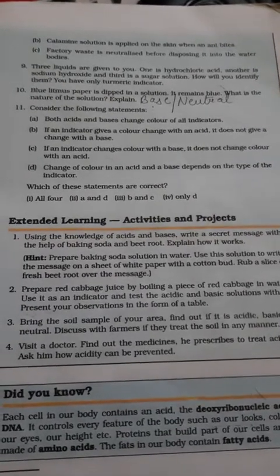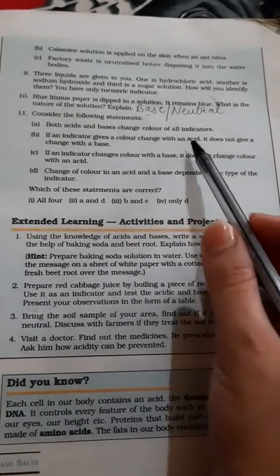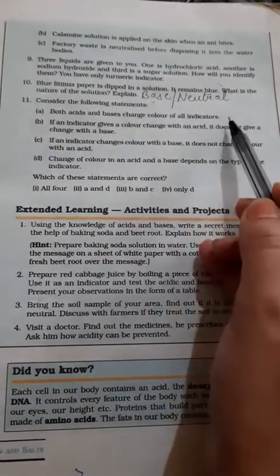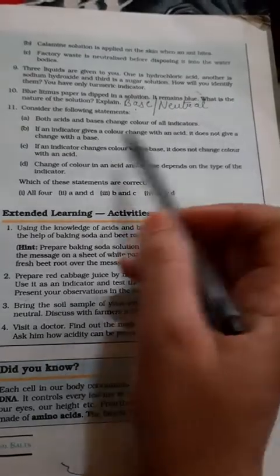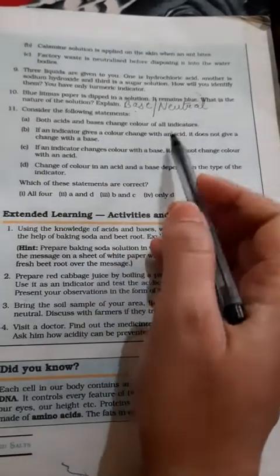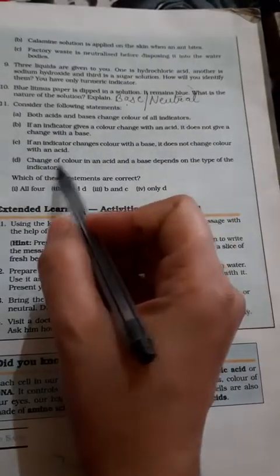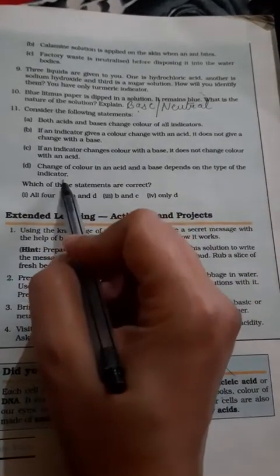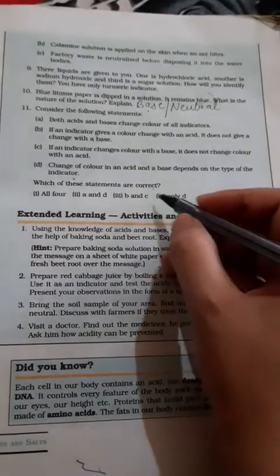Last question: consider the following statements and identify which is correct. First: since both acids and bases change the color of indicators, they cannot be distinguished — this is false, because an indicator does not show color change with neither. Second: if an indicator gives a color change with an acid, it does not give a color change with a base — this is wrong, because an indicator can show color change with both. Third: if an indicator changes color with a base, it does not change color with an acid — again false. Last statement: change of color in an acid and base depends on the type of indicator — this is absolutely correct. So our answer is option D only.